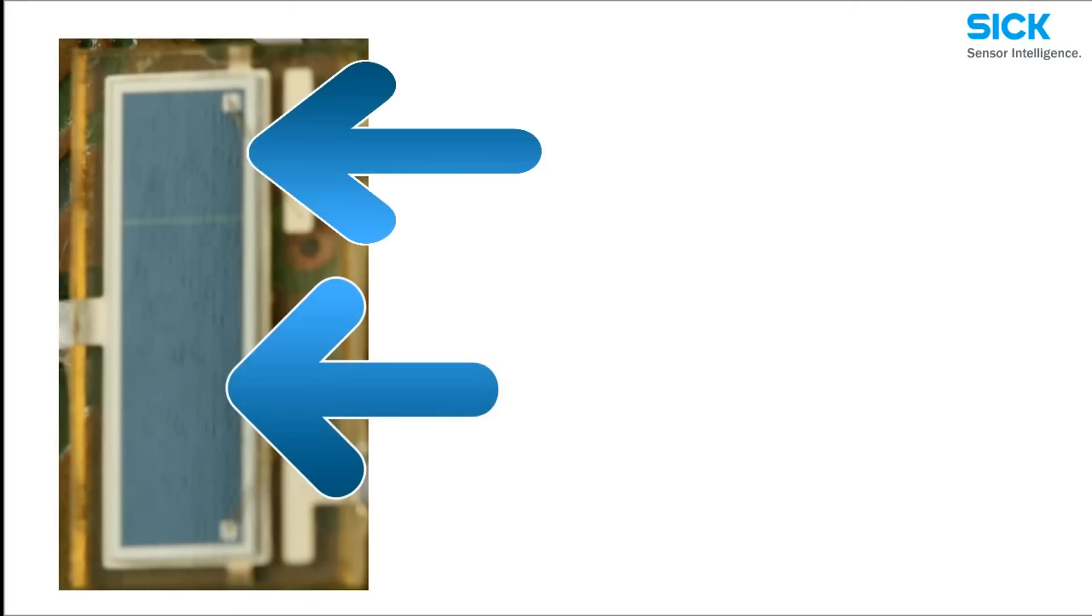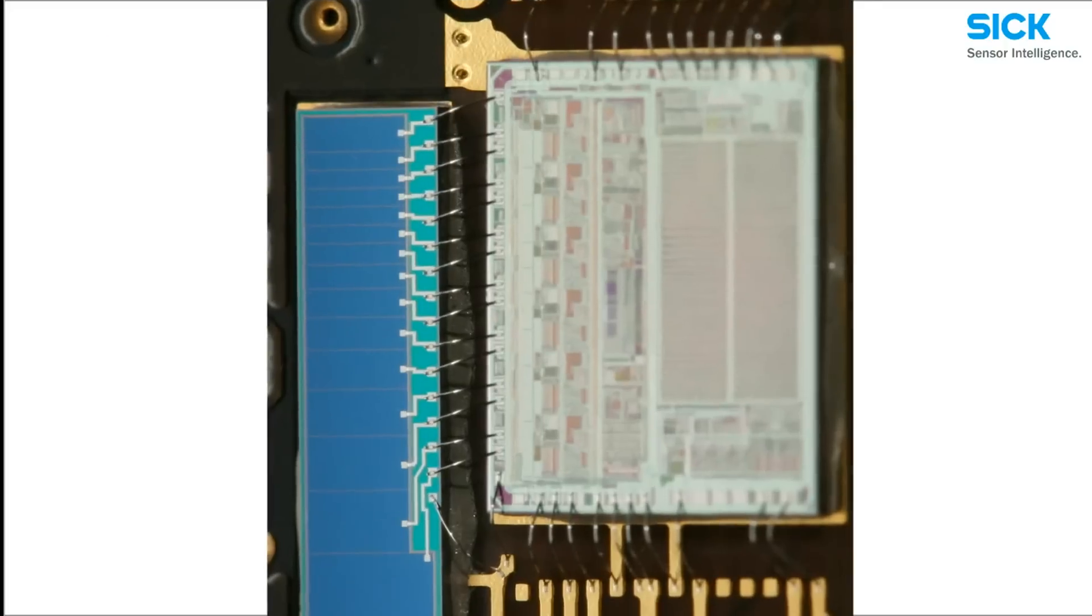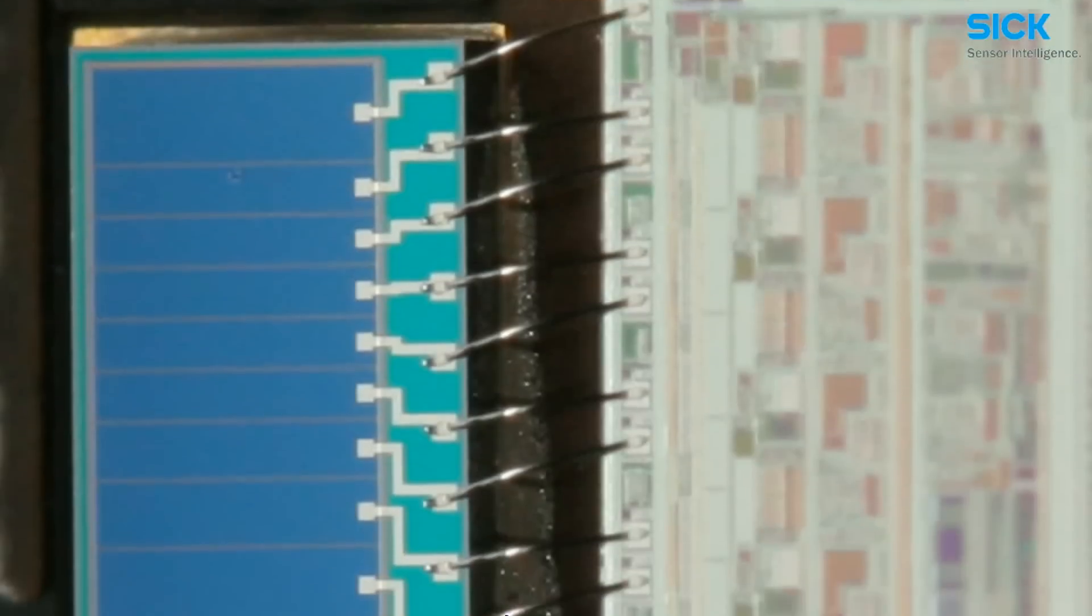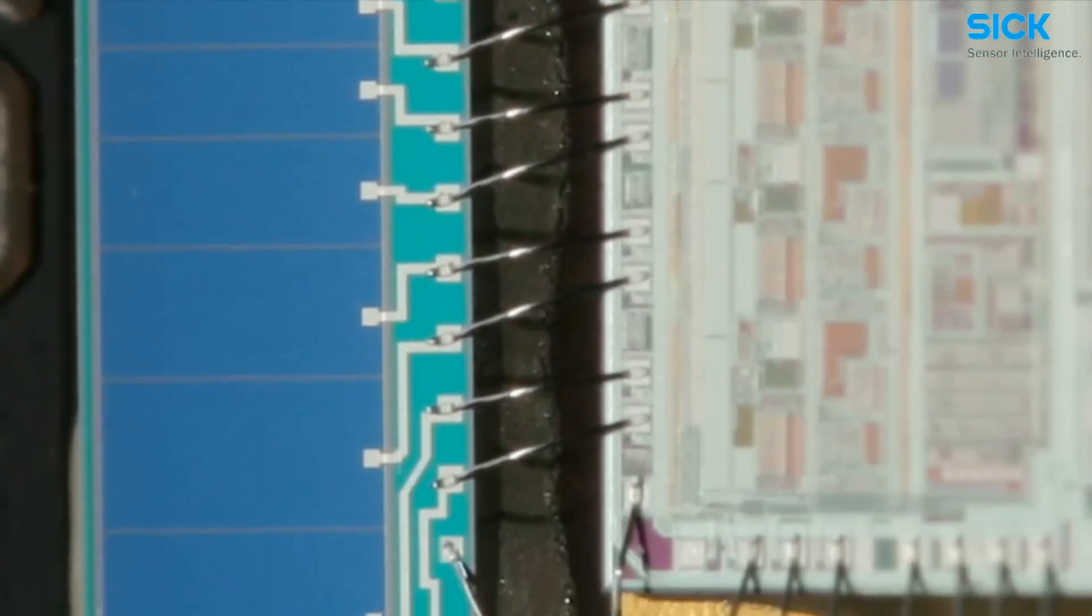Background suppression sensors are proven to have solid performance with just one two-zone receiver. SICK takes it a step further by incorporating multiple receivers into the patented SICK ASIC for even more accurate detection.